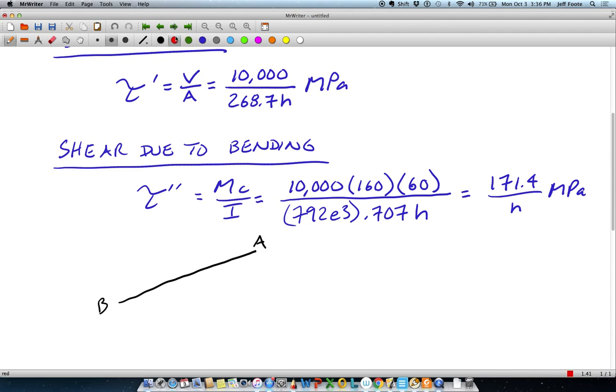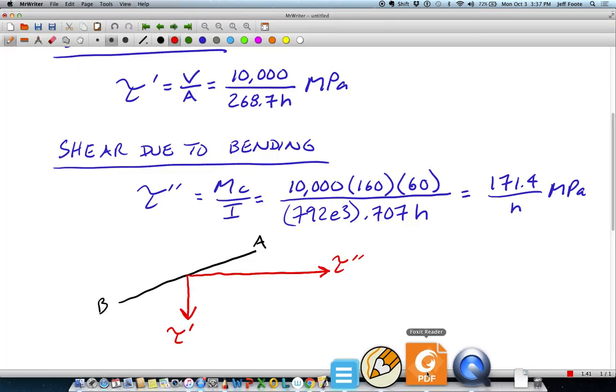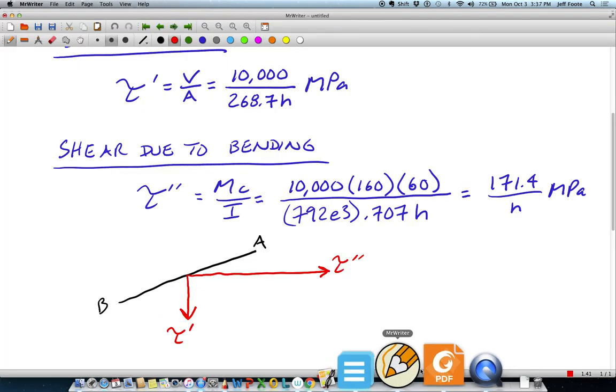The stresses we're calculating are going to be valid all along that line, but we're just going to consider it at one point of tau prime and tau double prime. Those are opposite the directions of the forces on the previous diagram. You can just take these to be the direct shears as opposed to the reactions.